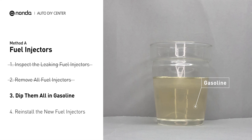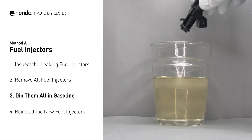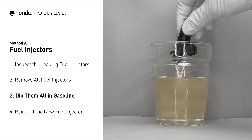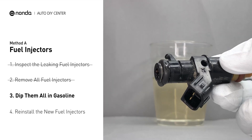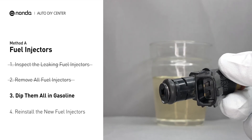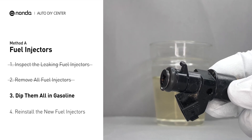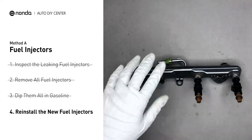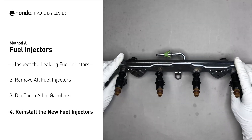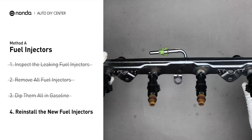In order to prevent leaking, get some gasoline, put it in a cup, and then dip the new fuel injector into it, so the seals may get wet with gasoline and it will go in and won't leak. After that, just slide all the new fuel injectors in.